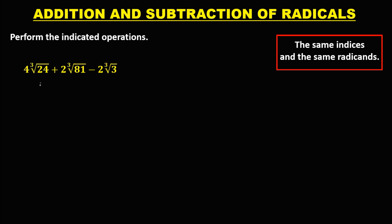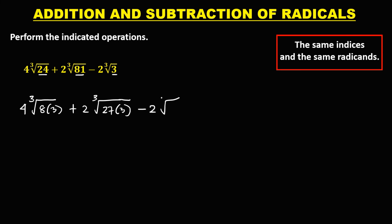For this last given, we need to rewrite 24, 81, and 3. So we have 4 times the cube root — 24 is 8 times 3 — then plus 2 times the cube root of 81, and just copy the cube root of 3. To simplify: we have 4, and the cube root of 8 is 2, then the cube root of 3, then plus 2 times the cube root of 27, which is 3, then the cube root of 3.